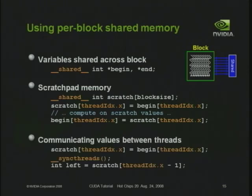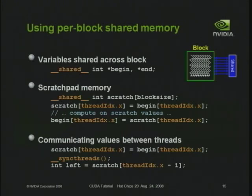There are several typical usage scenarios for shared memory. First, variables shared by all threads of a block — for example, begin/end pointers defining which window of an array a block is processing. Declaring them as shared prevents replication across all threads, so there's only one instance. Another pattern is using it as scratch pad memory — loading data from global memory into on-chip shared memory, processing it, then writing it back. Third, using shared memory for inter-thread communication: one thread loads a value, a barrier ensures all loads are complete, then threads can read each other's values.